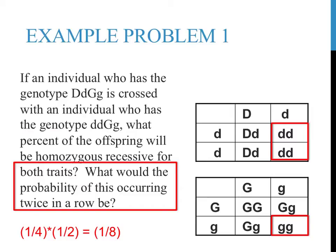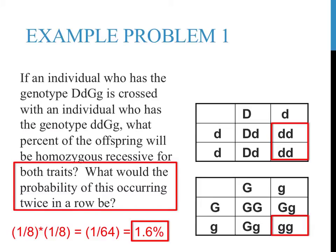The second question asks: what is the probability of having a child that is homozygous recessive for both traits happening twice in a row? There is a one-in-eight chance of this event happening once. In order for this to happen twice in a row, you would take the probability of the first event occurring — one-eighth — times the probability of this same event happening again — one-eighth. One-eighth times one-eighth is one-sixty-fourth, or 1.6%. There would be a 1.6% chance of having two children in a row that are both homozygous recessive for these two traits.